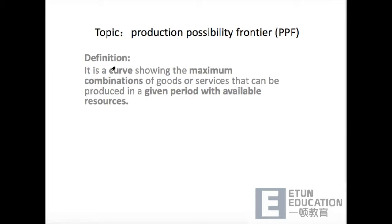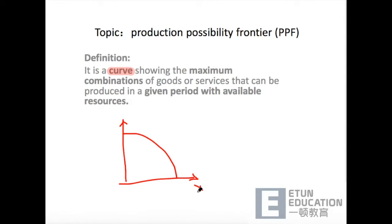这个定义中有几点重要的信息。First of all, it's a curve. 当我们遇到PPF的考点的时候，基本上都会给一个图表，然后这边一般是Quantity of good X，这边一般是Quantity of good Y。那这一条就是我们的PPF。它还会给到几个点，比如说在这条线上的、在这条线里面的和线外面的，分别代表什么呢？一定要记住，在这一条PPF线上面的点，都是我们的maximum combinations of goods or services。